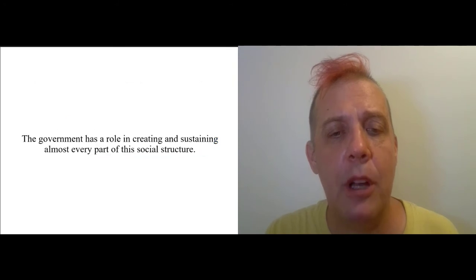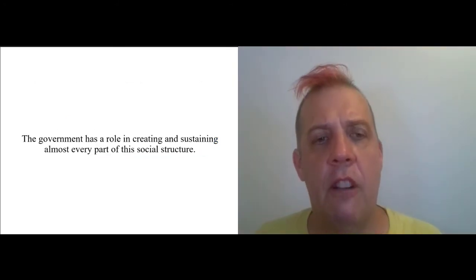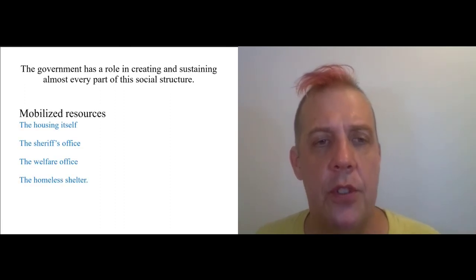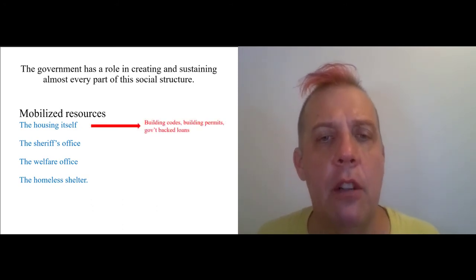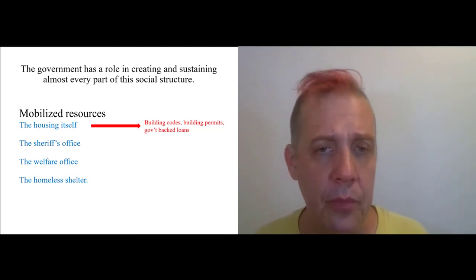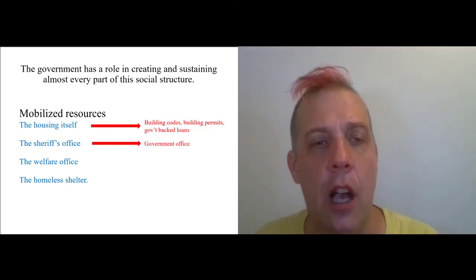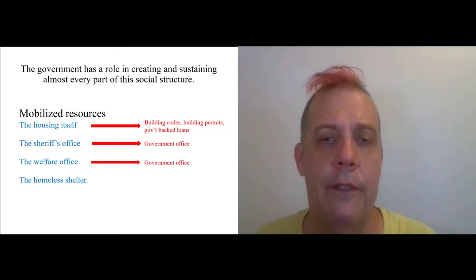So let's talk about the government now. This is important. The government has a role in creating and sustaining almost every part of this social structure. So, I mean, think about the structure, right? We've got mobilized resources. The housing itself is a mobilized resource, but the housing is a product of the government. You have buildings that are built to building codes, and you have to get building permits to do them, and often you have government-backed loans. The way the government enforces building codes and issues building permits totally controls this social structure. The sheriff's office is a government office. The welfare office is a government office.